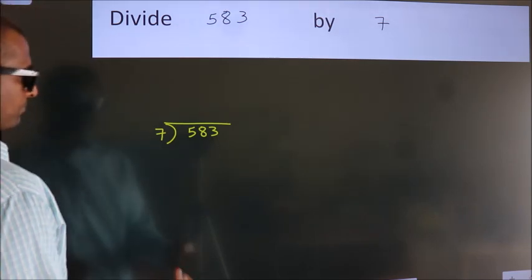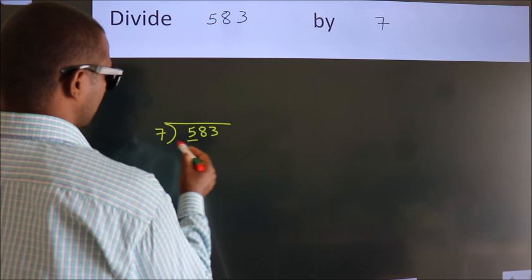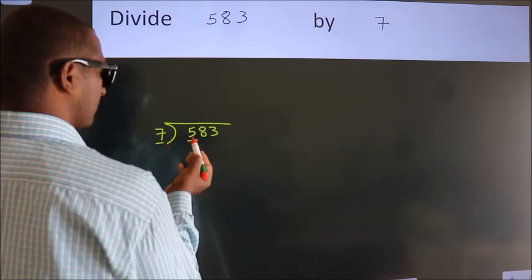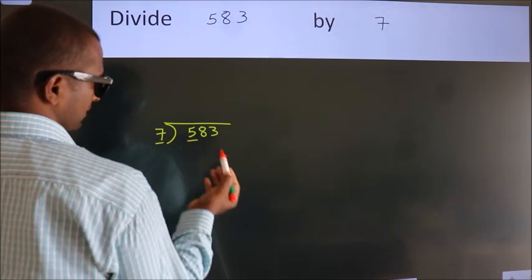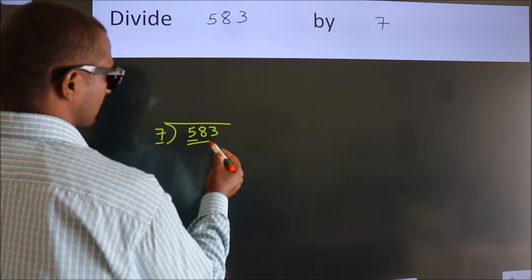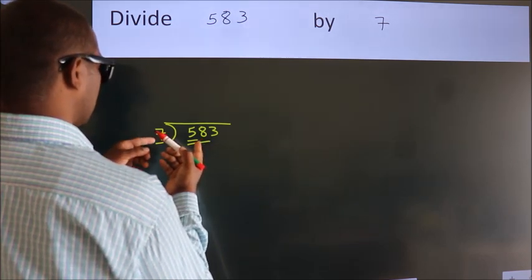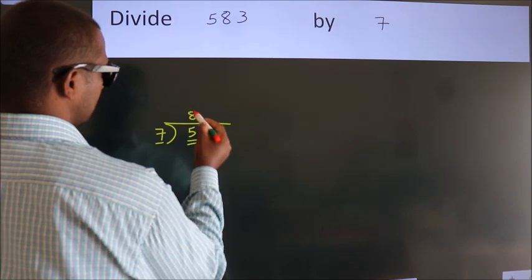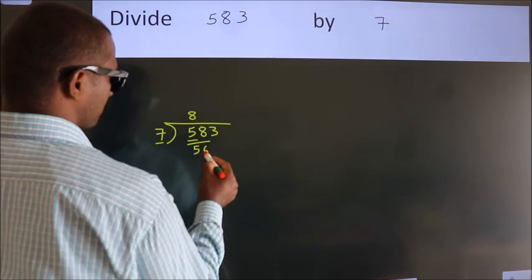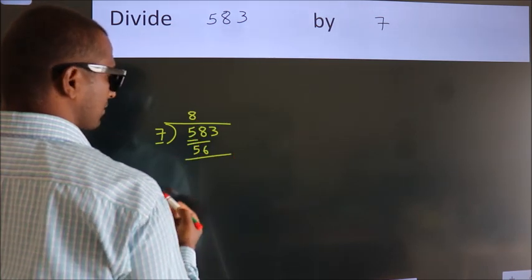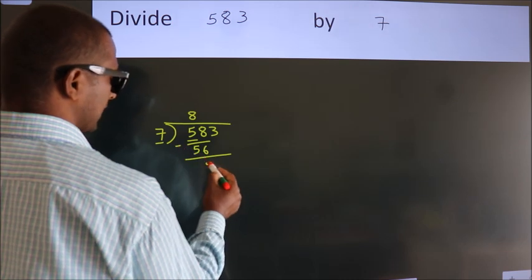Next. Here we have 5, here 7. 5 is smaller than 7, so we should take two numbers: 58. A number close to 58 in the 7 table is 7 times 8, 56. Now we should subtract. We get 2.